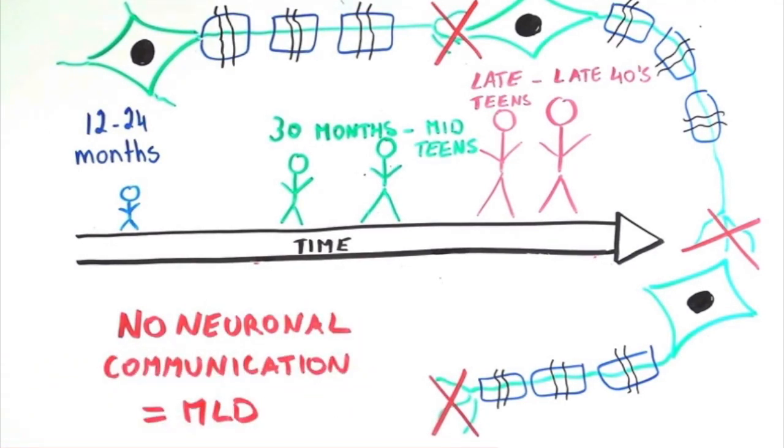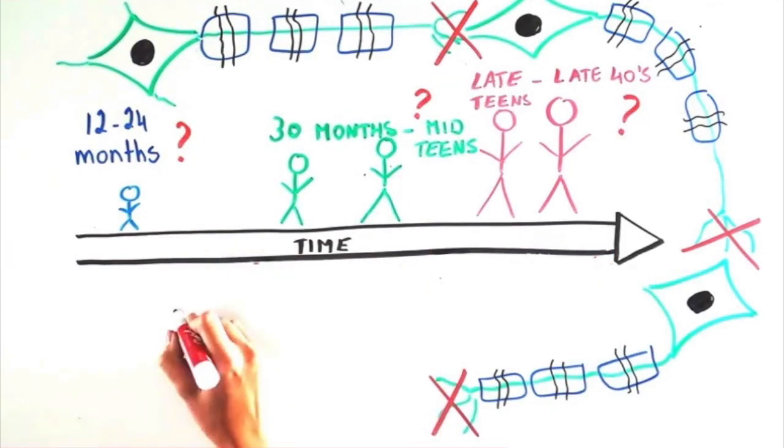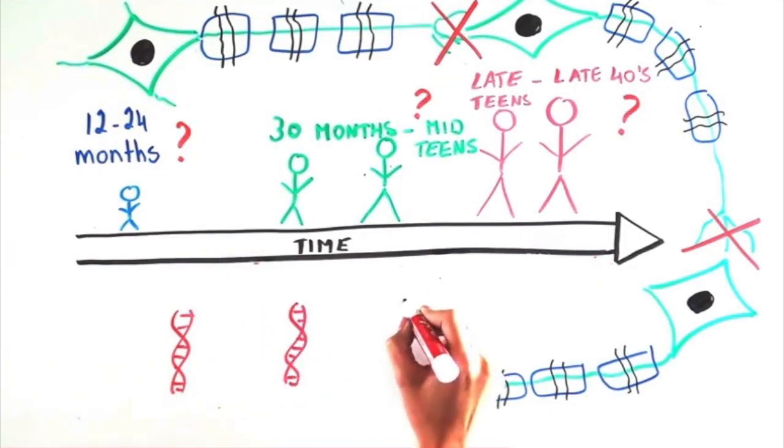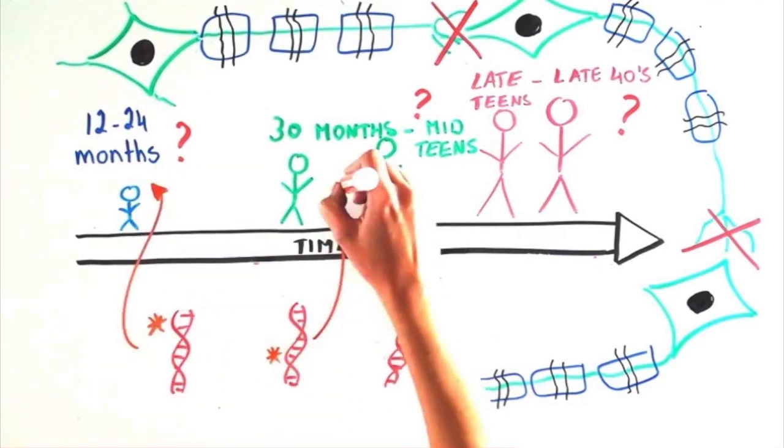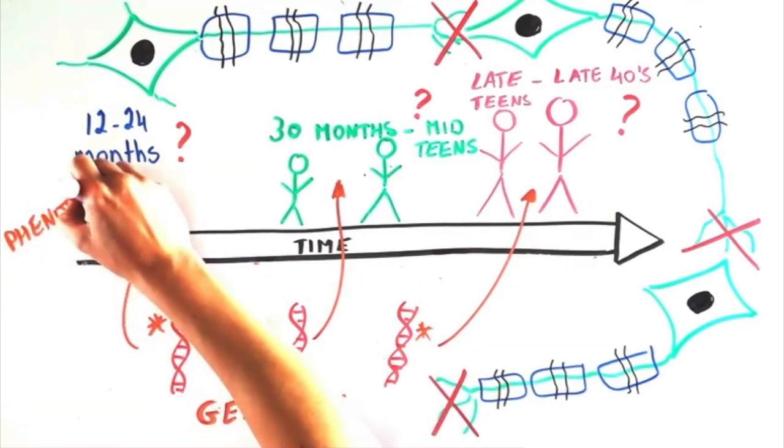Despite the same underlying biology, we don't know why someone would develop one clinical subtype of MLD versus another. We want to understand the relationship between the type of mutation or genotype to the symptom or phenotype to understand this more.